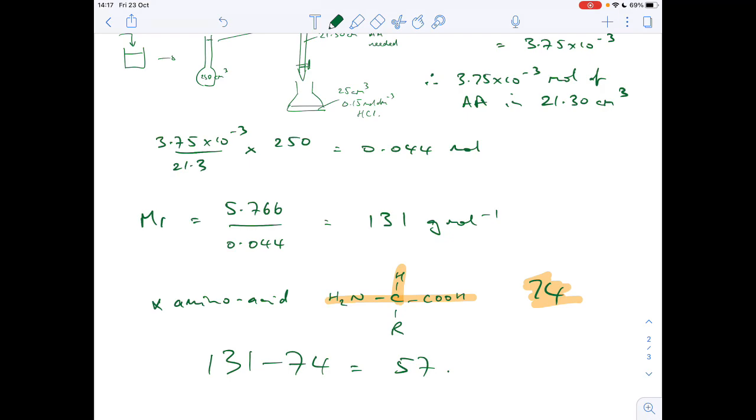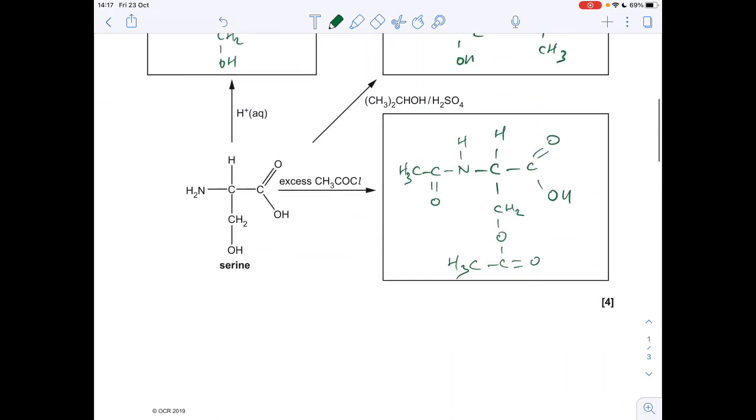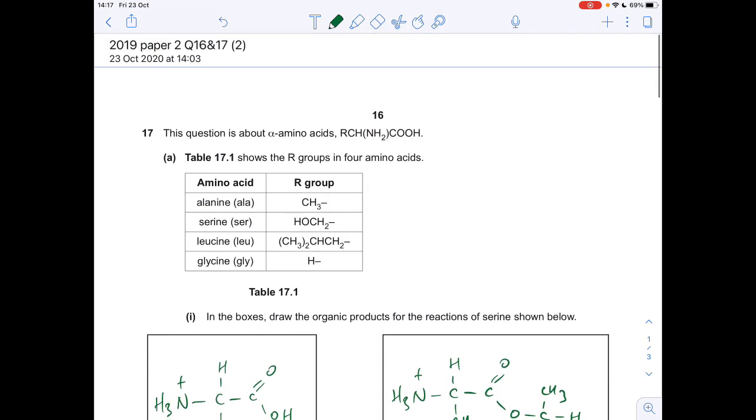So then all we need to do is go to the table and work out which R group has an Mr of 57, and the answer is leucine.